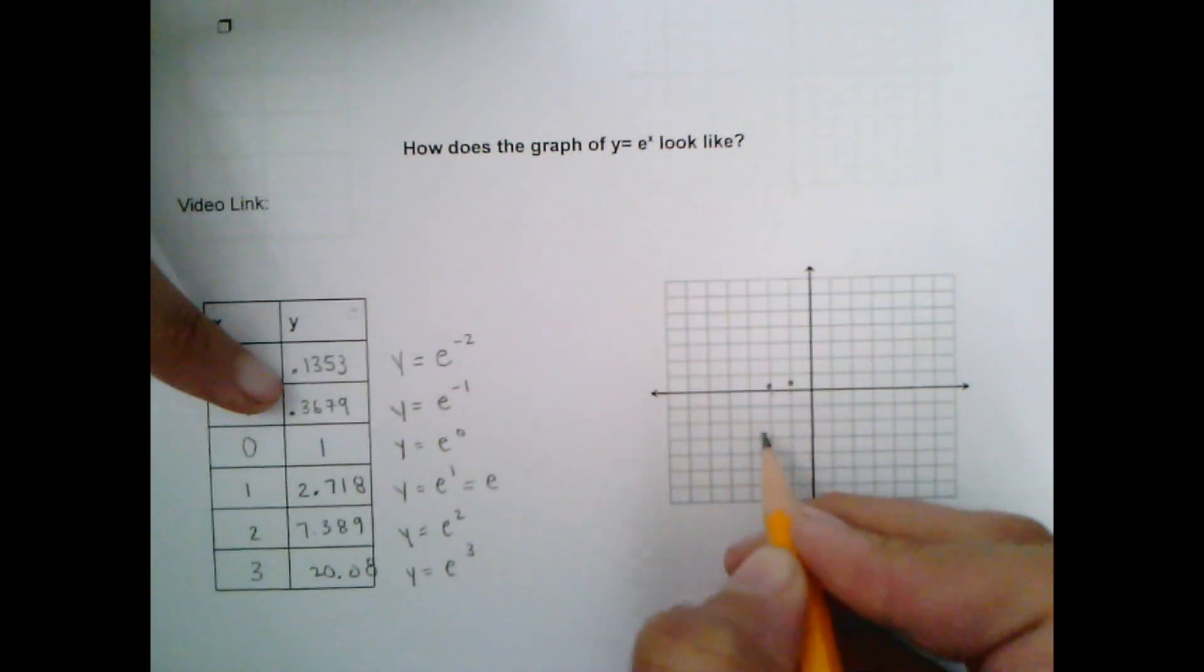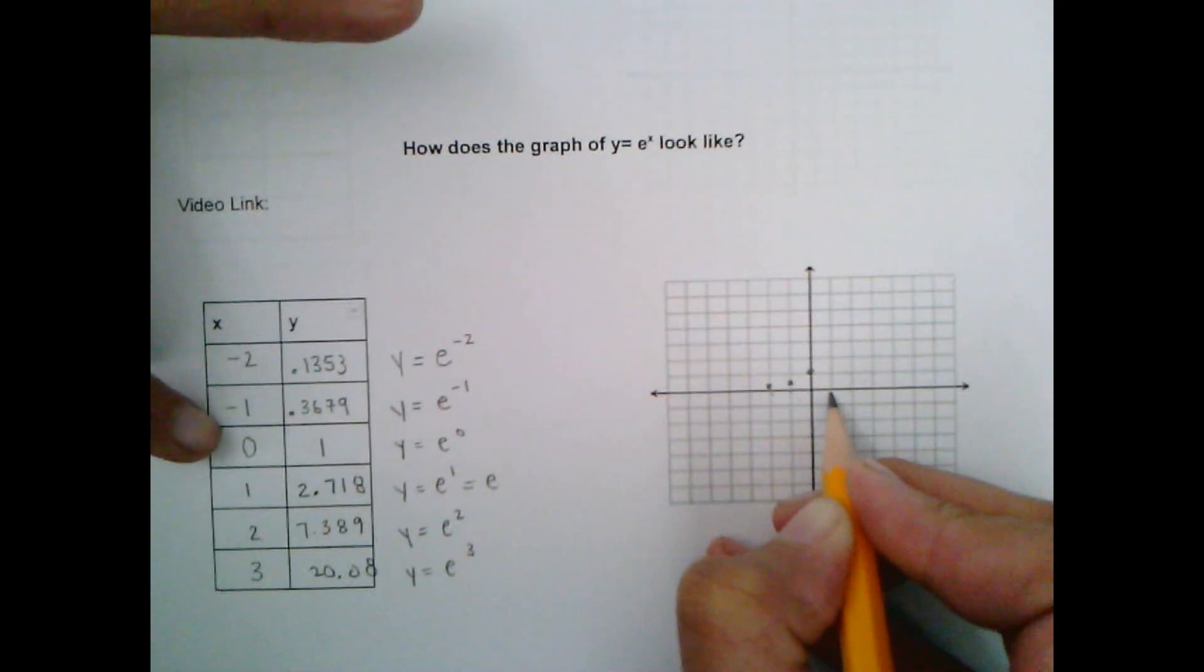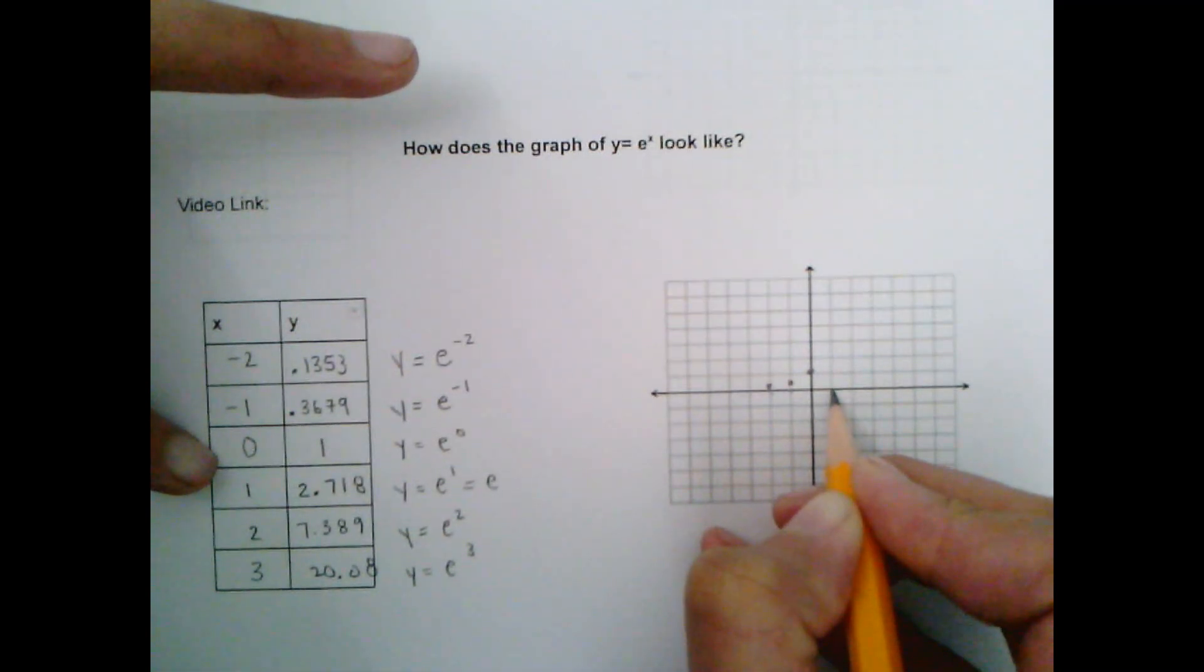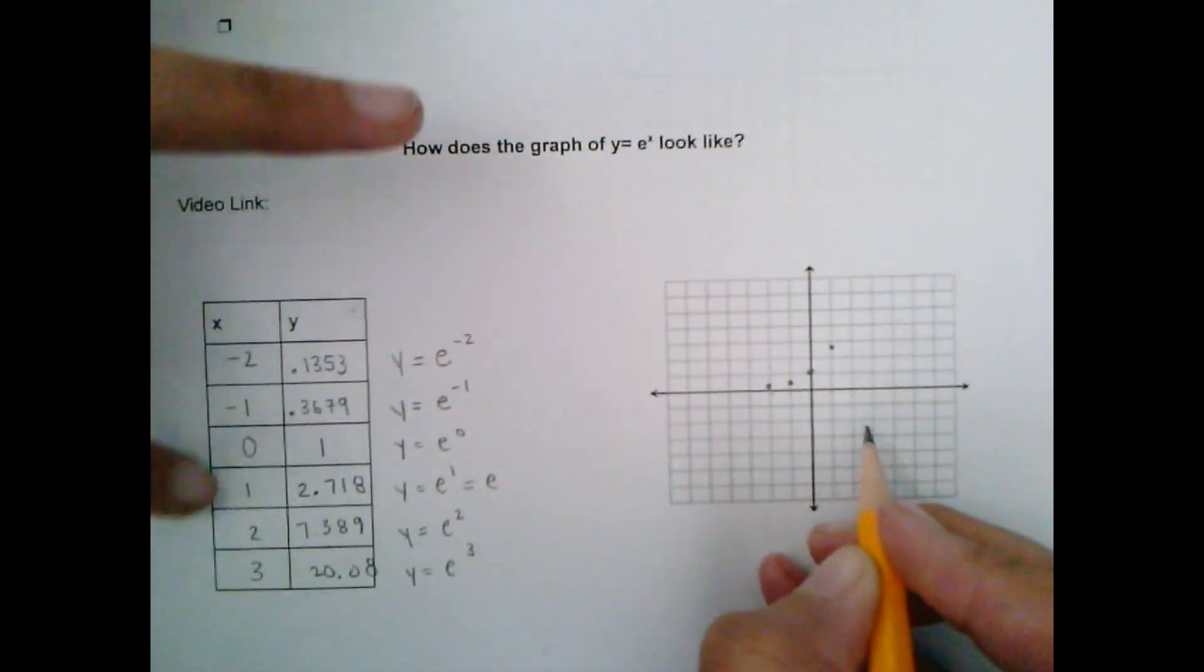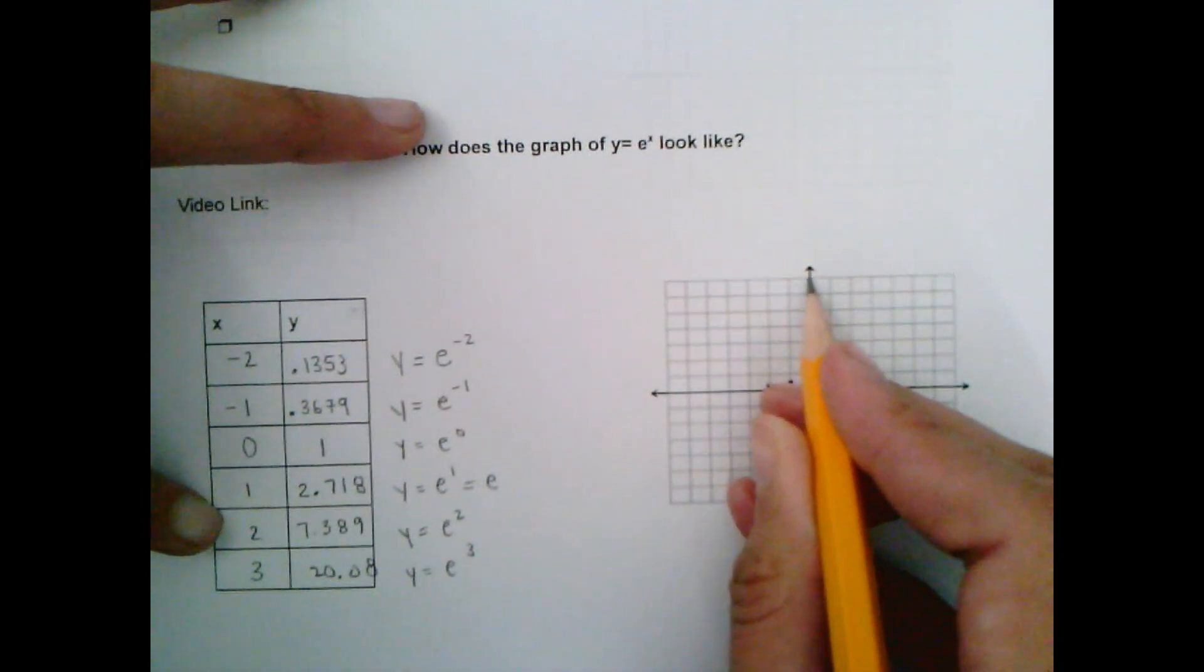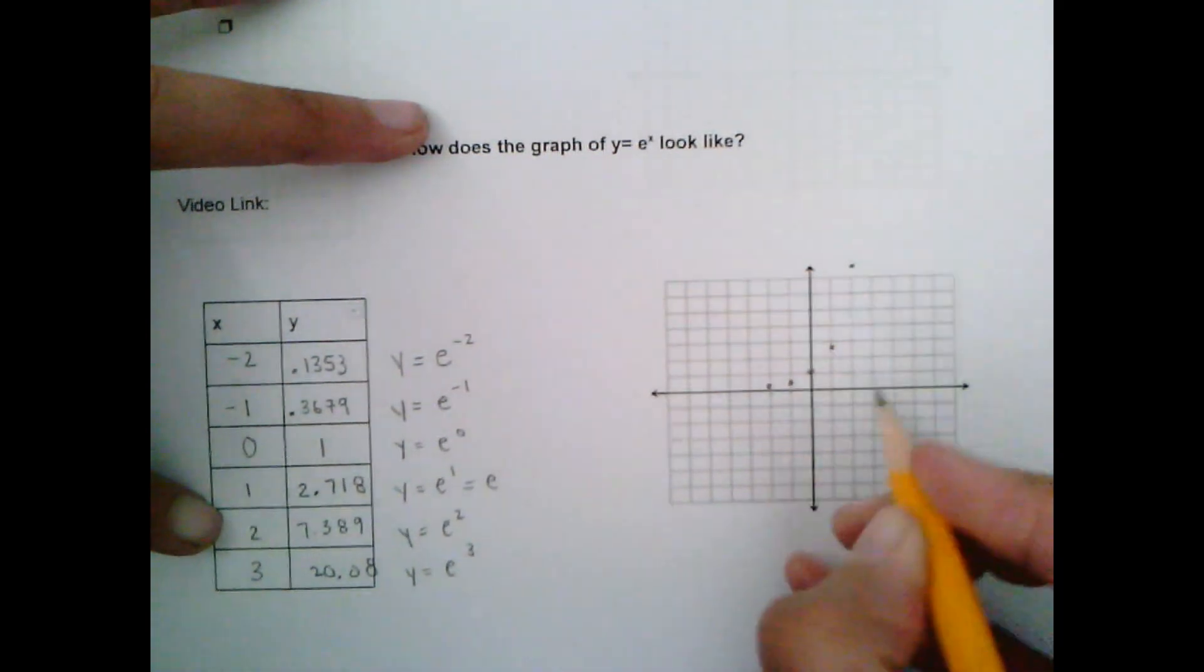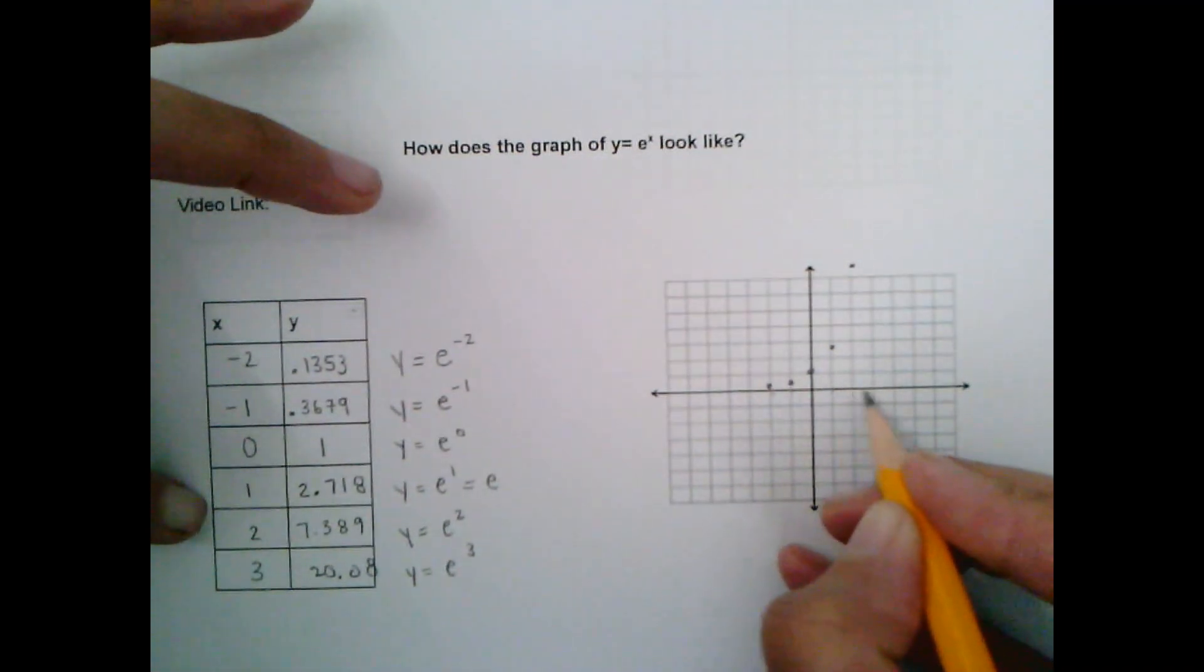Now when x equals 0 my y is 1. When x equals 1 my y is 2.78 so when x is 1 we got 2.78. It's more than halfway up. When my x is 2 you got 7.389 so hold on 1, 2, 3, 4, 5, 6, 7 so 7's up here so then this point is 7.3 up here. And then when x equals 3 we know that was 20.08, that's going to go all the way off our graph somewhere imaginary up there.